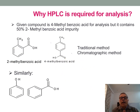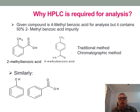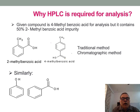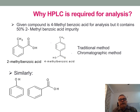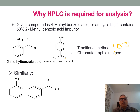The question comes: why is HPLC required for analysis? To answer this, we will analyze two sets of samples by both traditional method and chromatography method. Set 1 contains a mixture of 4-methylbenzoic acid and 2-methylbenzoic acid in a ratio of 1 to 1. When analyzed by titration or UV method, we will always get a result of about 100%. But when analyzed by HPLC, we will get a result of 50%.